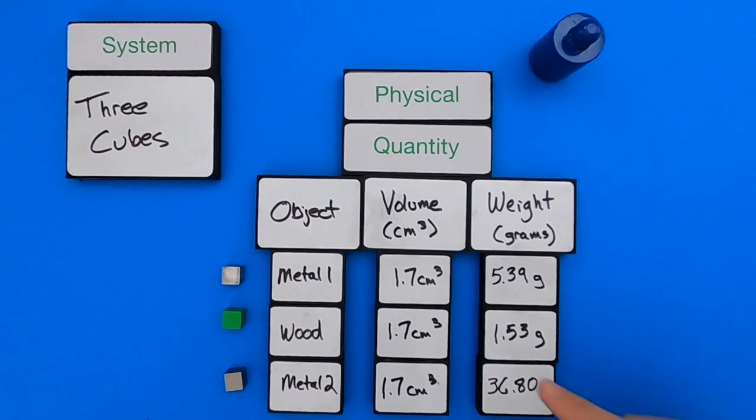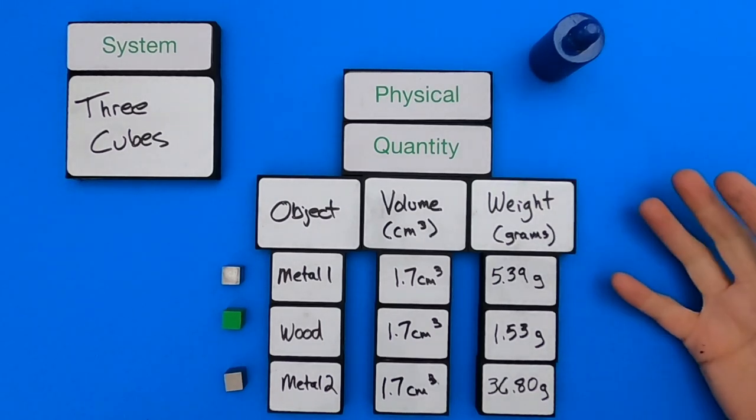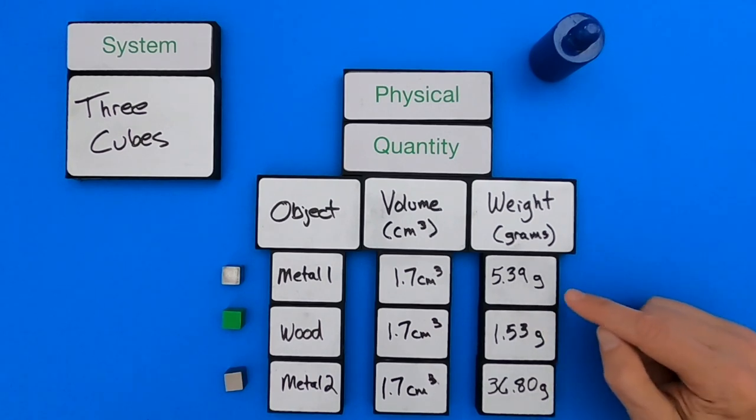Now that's something interesting. Even though they have the same volumes, the wood weighs less than the other two metals, but this metal weighs a lot, 36.8 grams compared to 5.39. So you can see the importance of physical quantities. I'm communicating with you not only a number, but since you know what a gram is, then we can all share those physical quantities.